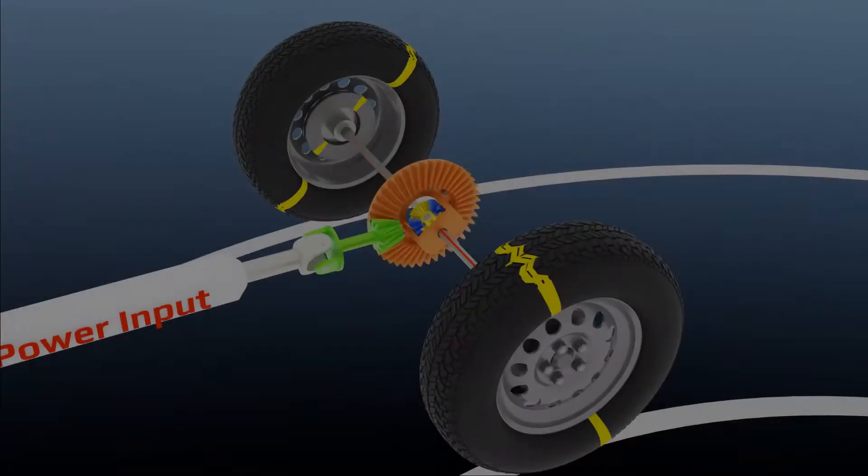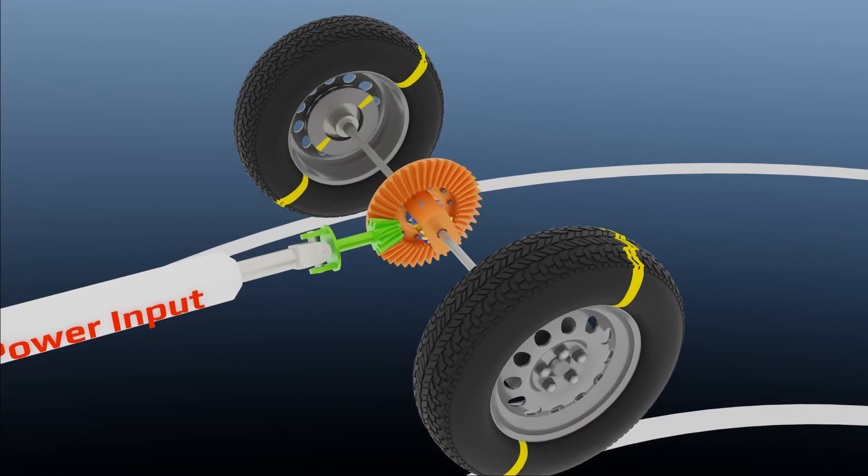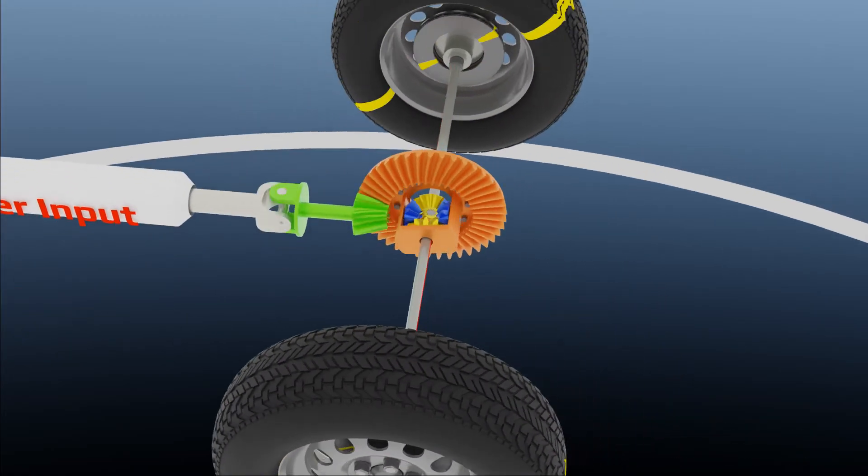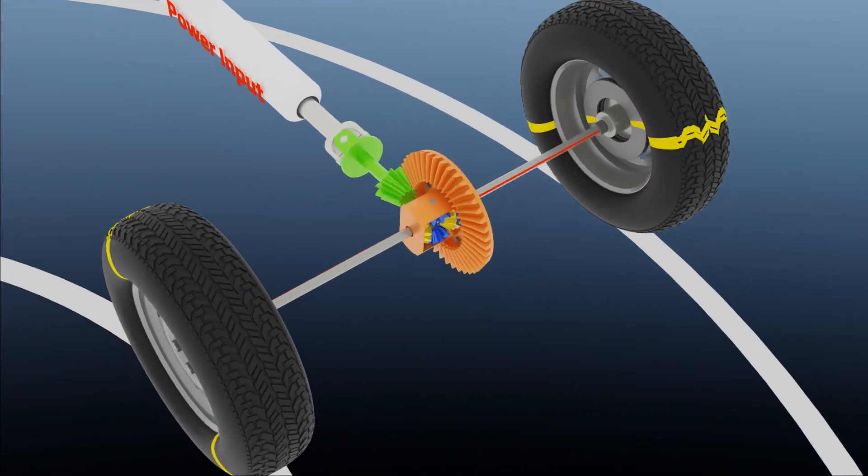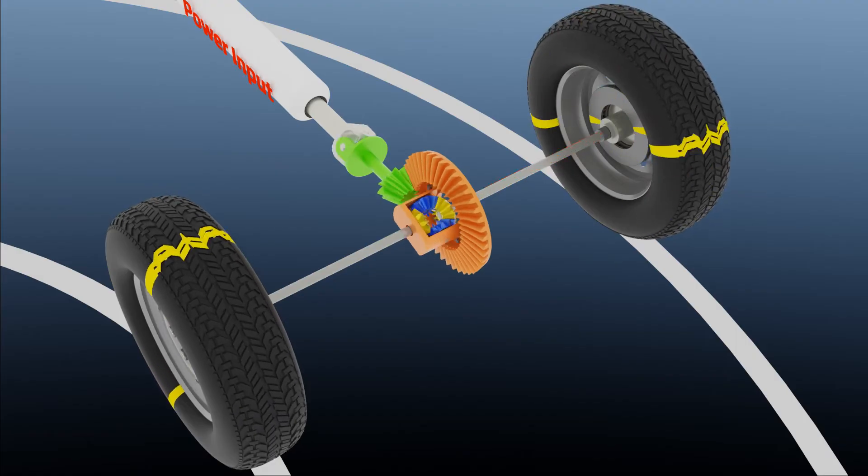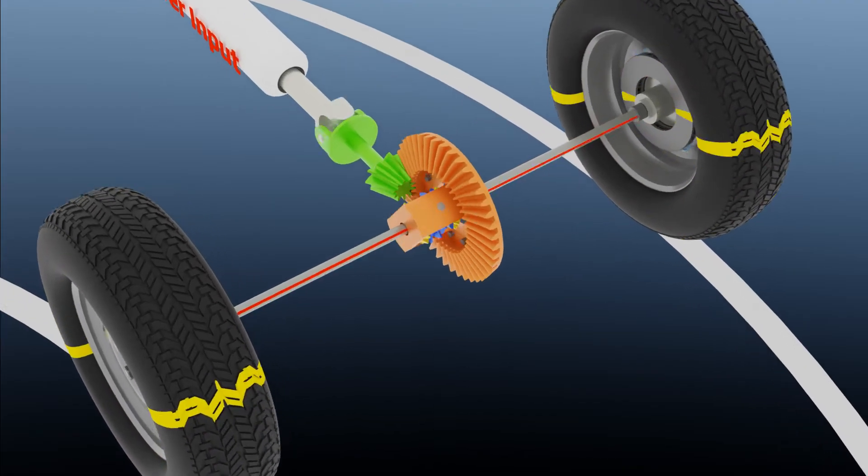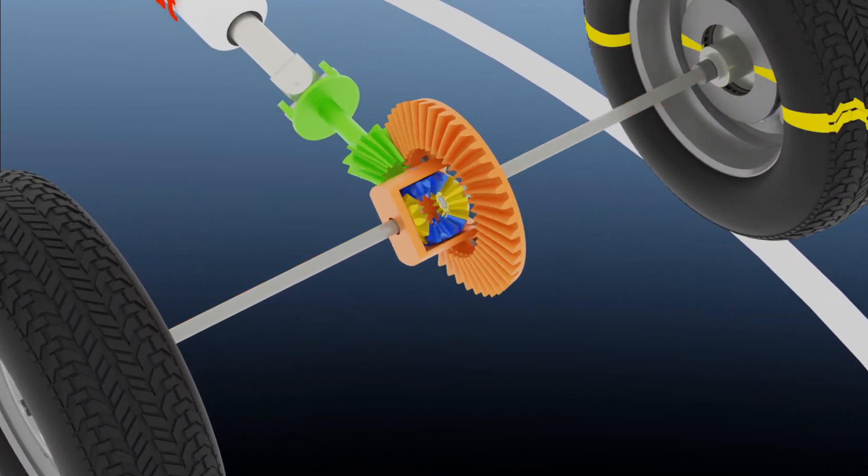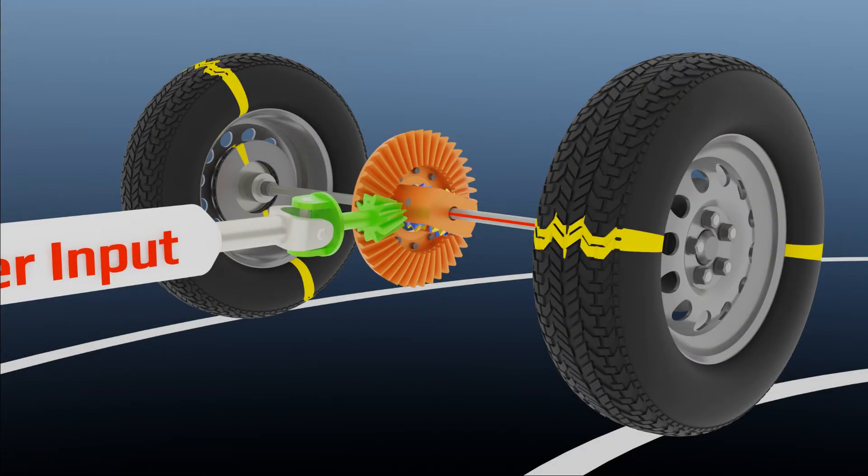But during making a turn, the outside wheel has to cover more distance than the inner side wheel. That means the outer side wheel has to rotate faster to make a smooth turn. This differential unit makes it possible while following the curved path.